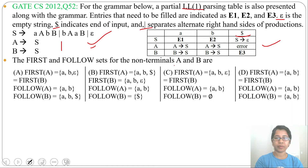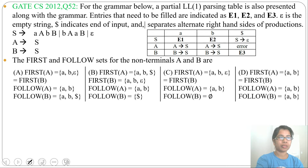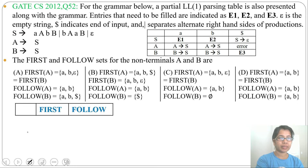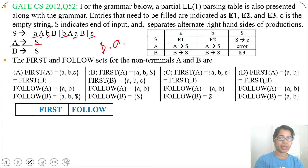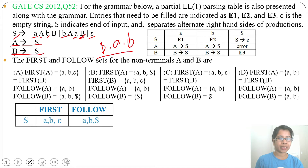Question 52 asks for the FIRST and FOLLOW sets for non-terminals A and B, with four options given. Let's find FIRST and FOLLOW of all variables S, A, and B, then check which option is correct. FIRST(S) will be {a, b, ε}. FOLLOW(S) will be {$}. FOLLOW(A) includes b and a due to productions, so FOLLOW(S) gives FOLLOW(B). FOLLOW(B) equals FOLLOW(S), so FOLLOW is simply {$, a, b} and FIRST is {a, b, ε}.